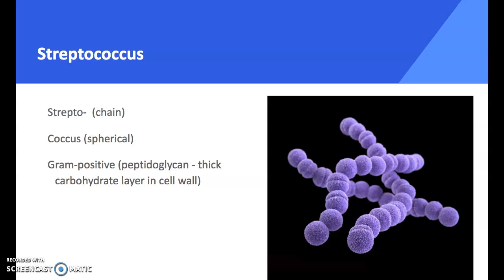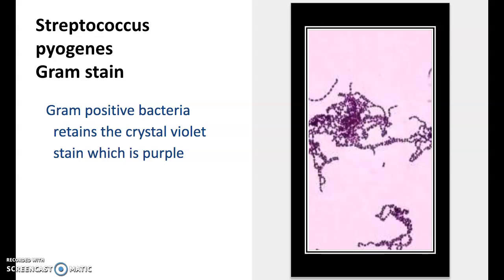It's called strep throat because the bacterium that causes it is called Streptococcus pyogenes. Strepto means chain, coccus means spherical — so you can see it's a straight chain of spherical bacteria. They're gram positive, which means when you do a gram stain they have that thick peptidoglycan cell wall and will absorb the violet stain, appearing purple. Under a microscope at about a thousand times magnification you can see the straight chains of spherical bacteria stained purple.